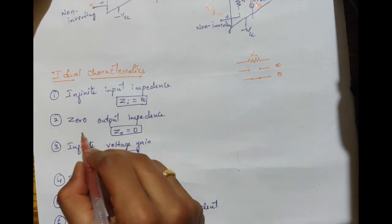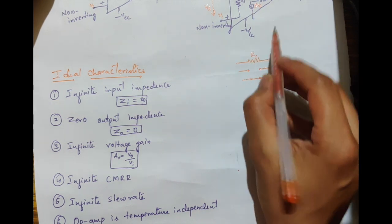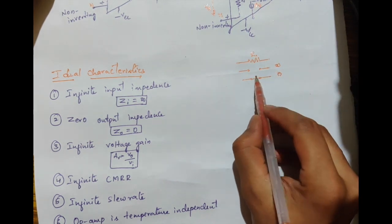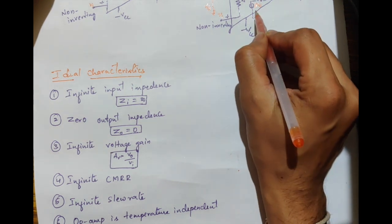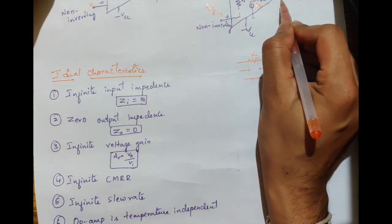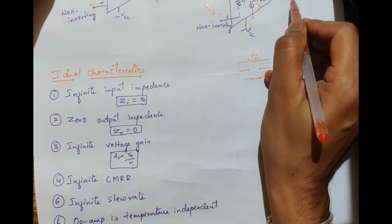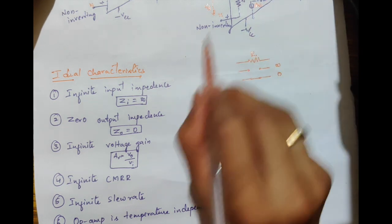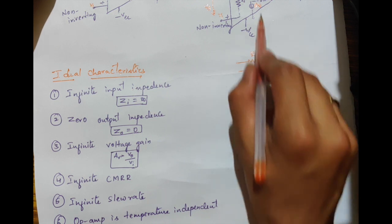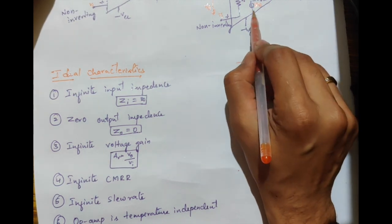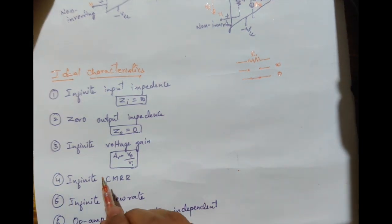Next is zero output impedance, where the output impedance is made zero in the ideal case so that it acts as a short circuit, allowing current to easily flow through the output terminal and giving us the desired output voltage. If it were made infinite, it would act as an open circuit, current would not flow, and we would not get the desired output voltage.